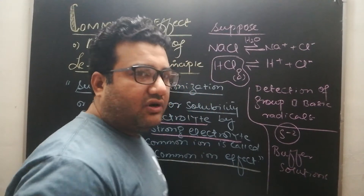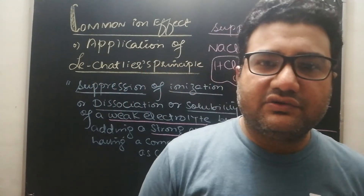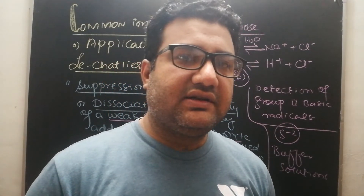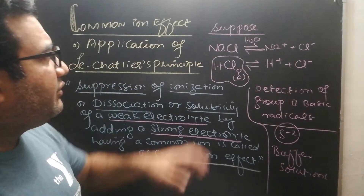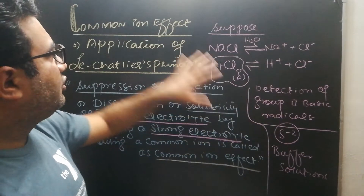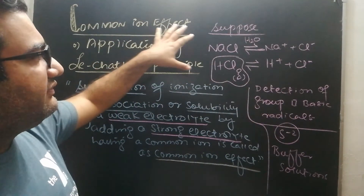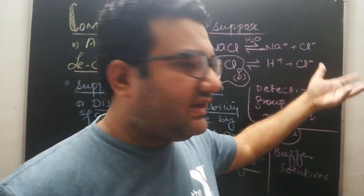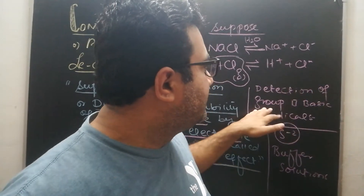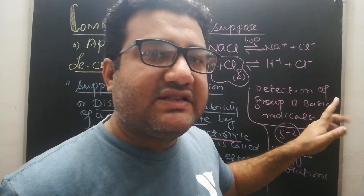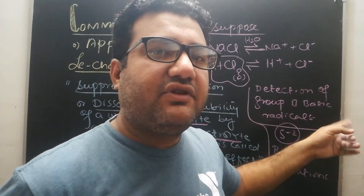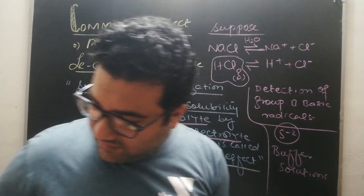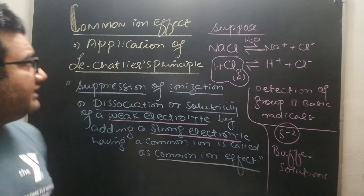I have already delivered a lecture on buffer solutions, so I recommend you watch that lecture. So these are three important applications of common ion effect: first, commercial purification of sodium chloride by passing HCl gas; second, detection of Group 2 basic radicals in the form of their sulfides; and third, buffer solutions. Now let us take an example.